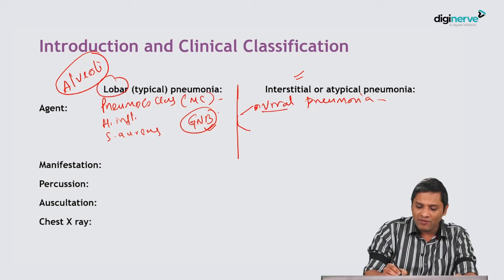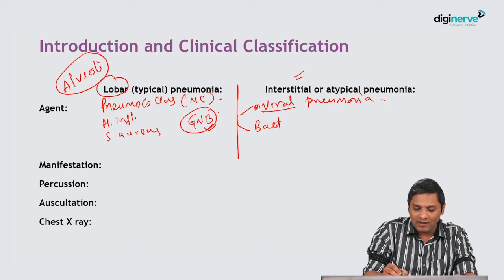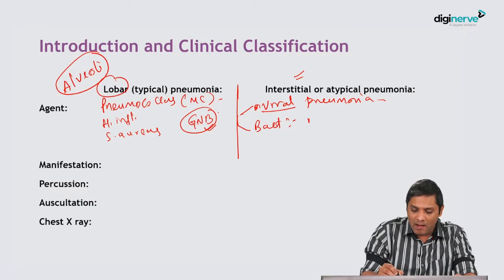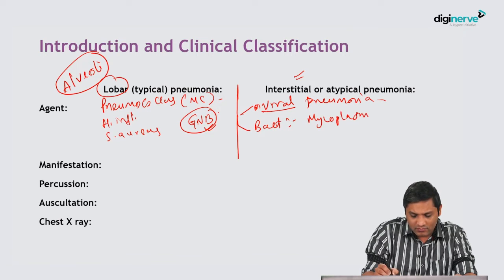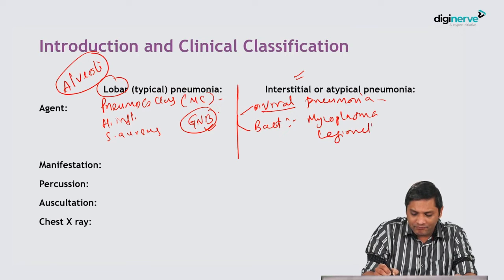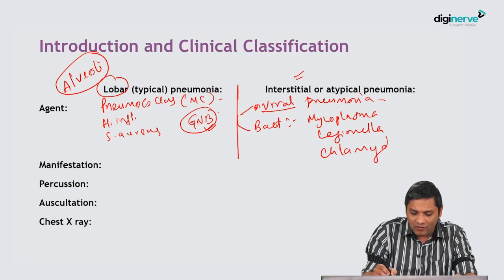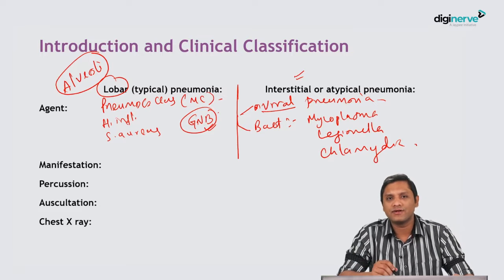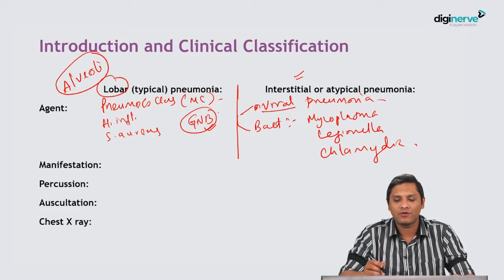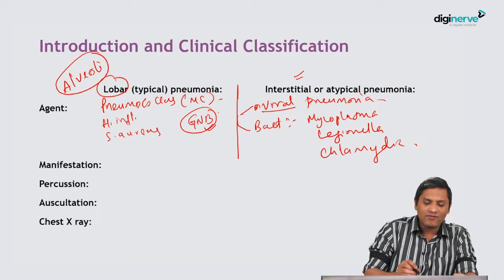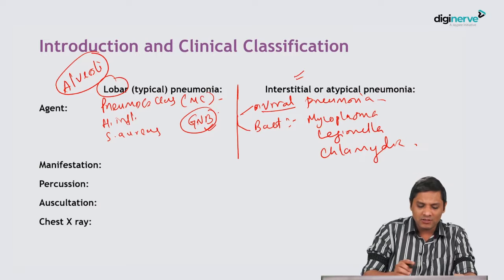Apart from viral pneumonia, various bacterial agents including Mycoplasma pneumoniae, Legionella, and Chlamydia are the bacterial agents of interstitial or atypical pneumonia. They vary from each other in various aspects.